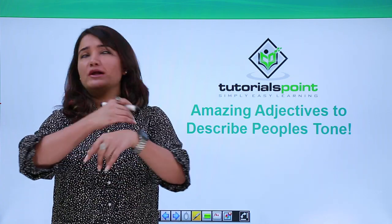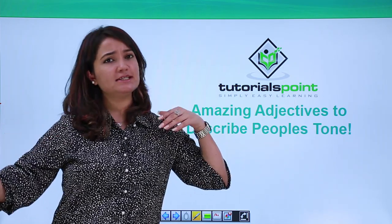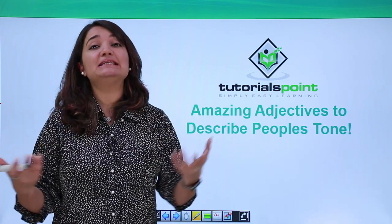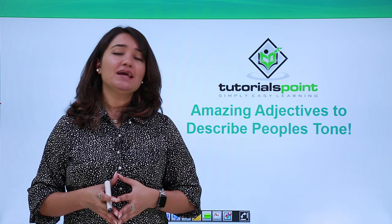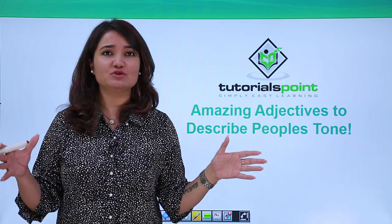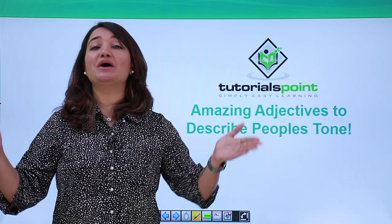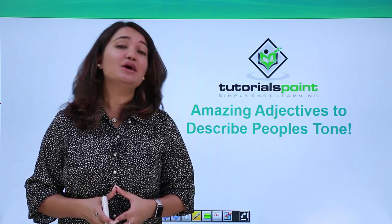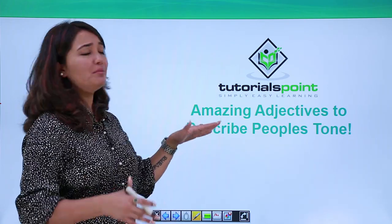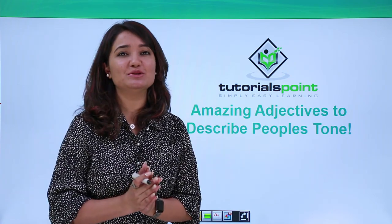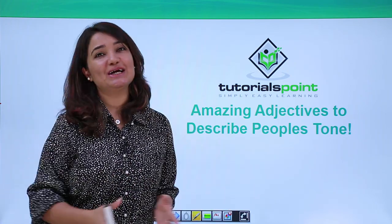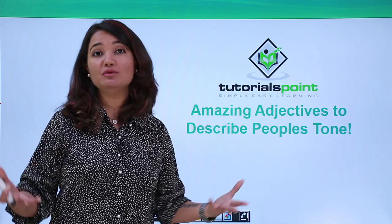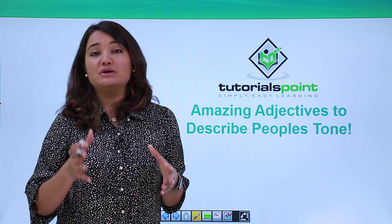We all speak in different tones. Our tonalities differ based on what we are thinking, or what we want to show, or what we want to let other people know that we are thinking. What are these different adjectives or words which we can use to describe different tones? How do we describe what sort of tone a person is using? Precisely, this video brings to you amazing adjectives to describe different people's tones. Let's go ahead and see what these different adjectives are and how we use them in a sentence to describe what a person's tone is.